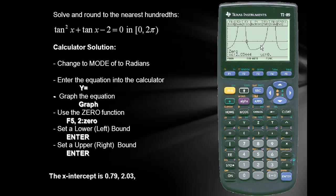We'll next calculate the third zero. So we'll press F5. We'll use the zero function. We'll set a lower bound. I'll press enter. We'll set an upper bound. I'll press enter once again. And our third intercept is 3.93.